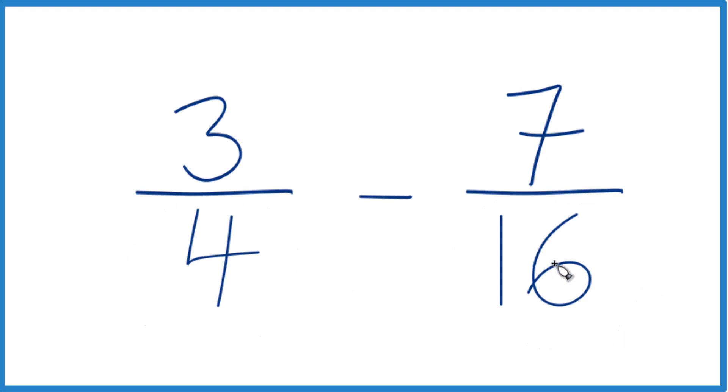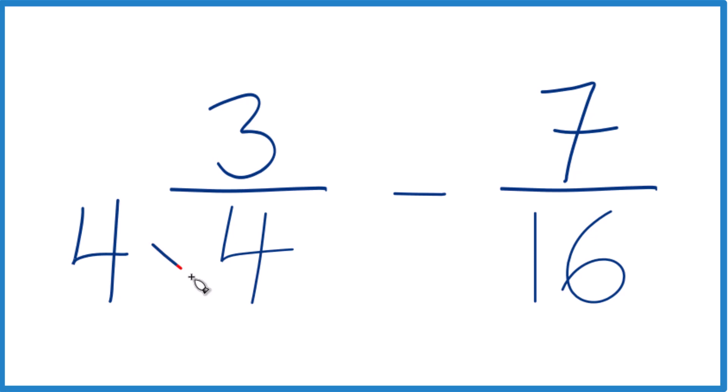4 goes into 16 four times. So if I said 4 times 4, that would be 16. I'd have 16 here and here. Everything would be good. But I can't just multiply the denominator by 4. I do need to multiply the numerator by 4. That's because 4 over 4 is 1. So it's just 1 times 3 fourths. So it doesn't change anything in terms of the value.